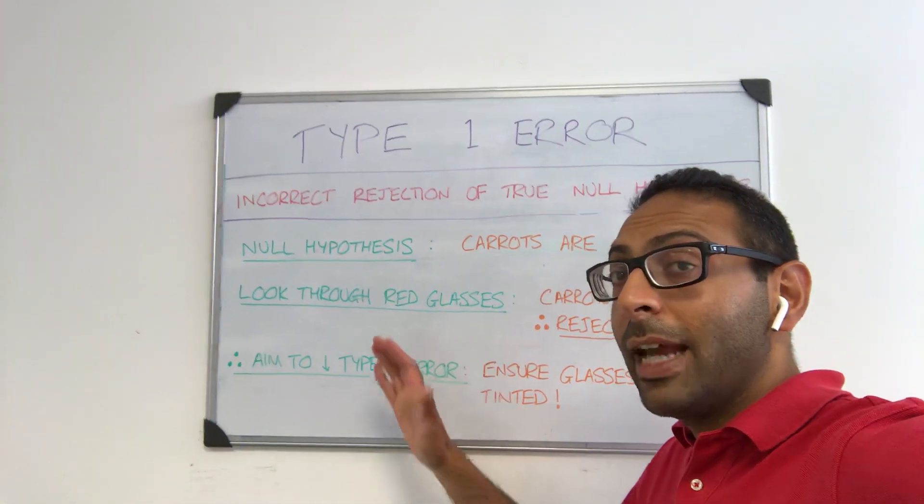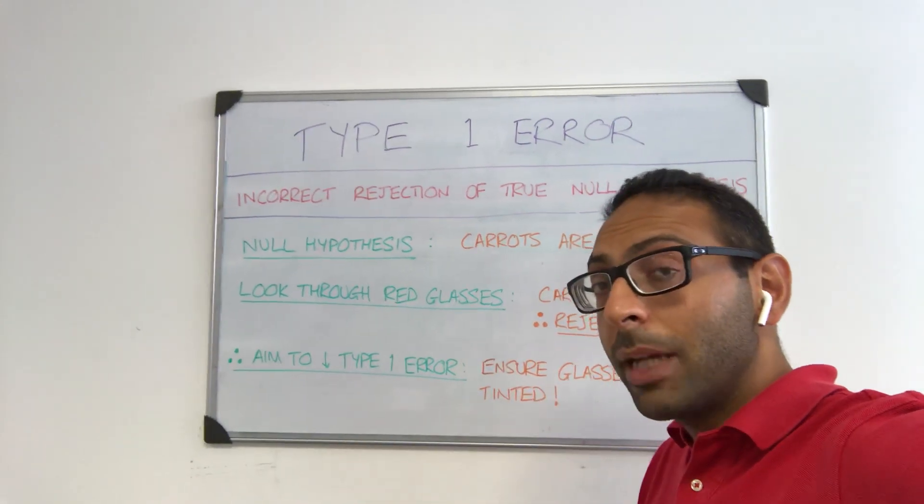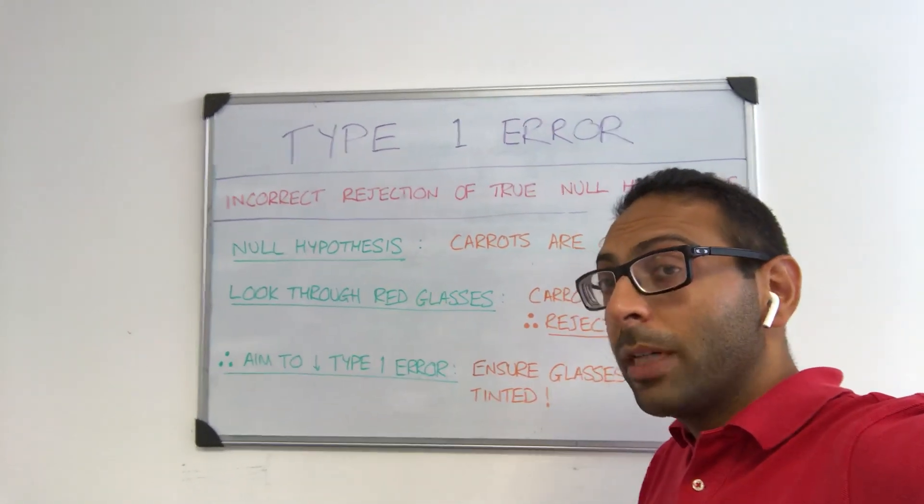So we're going to talk about type 1 errors, an area that people often get confused with when it comes to medical statistics, but let's put it into an example to give it a bit of context.